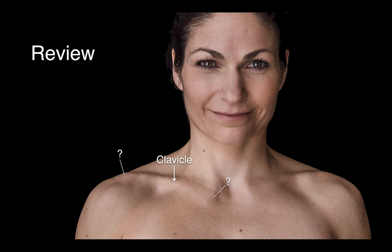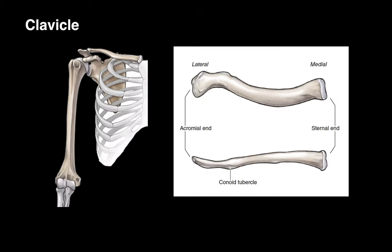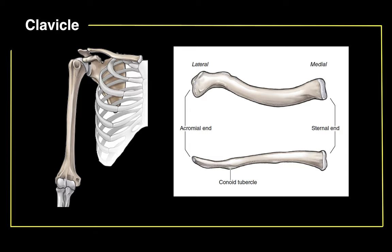To review: the lateral end of the clavicle is called the acromial end, and the medial end is called the sternal end. And that is the clavicle in a nutshell.